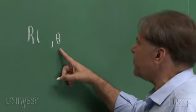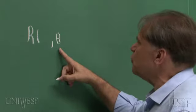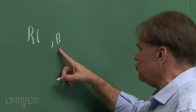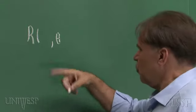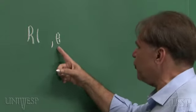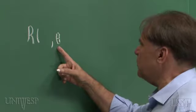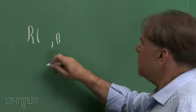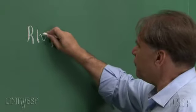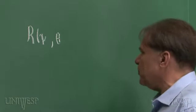Seguido por uma rotação em torno de um eixo que chamamos de x', que é o eixo x depois que eu fiz a rotação do referencial por um ângulo θ. Portanto, se eu fizer esta rotação em torno do eixo x' por um ângulo φ.